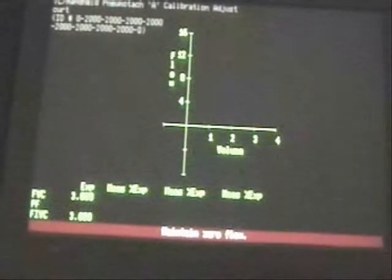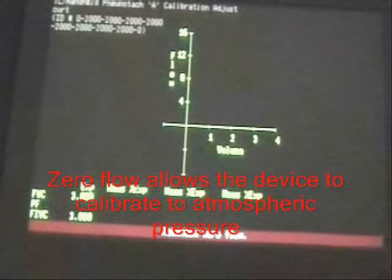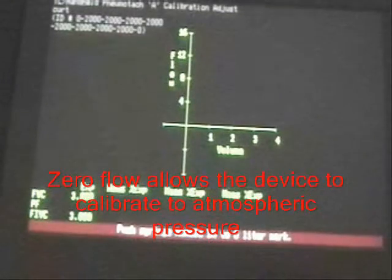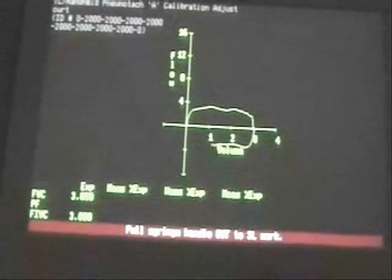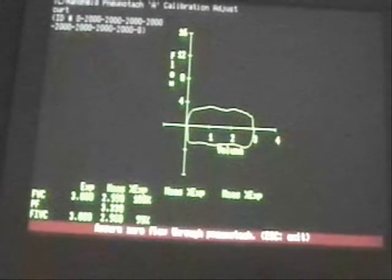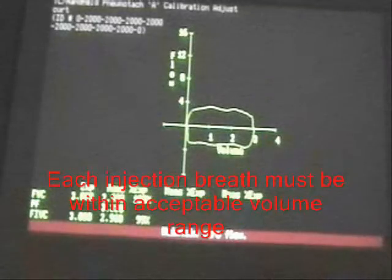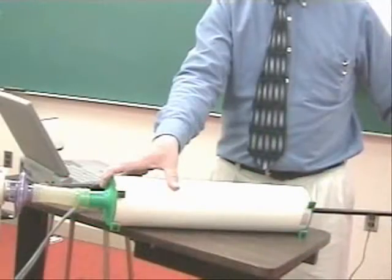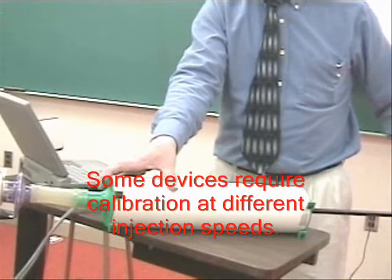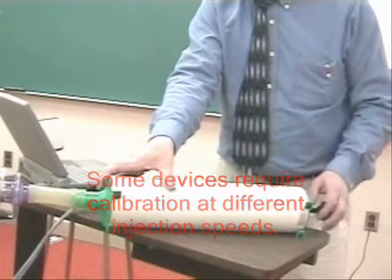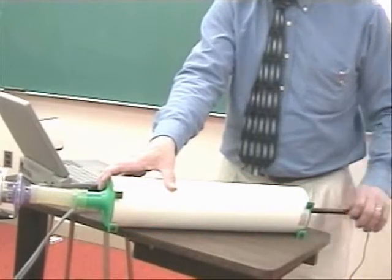Now we don't want to move it. It says maintain zero flow. Push in syringe to zero, pull out to the 3 liter. Do not move, maintain zero flow, no movement on the syringe. Push in the syringe handle to zero, and pull out.